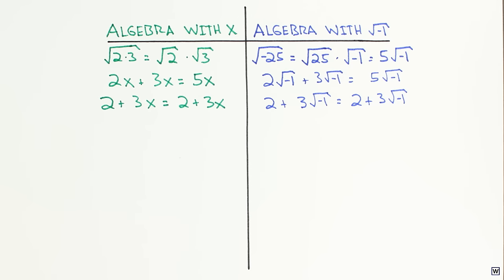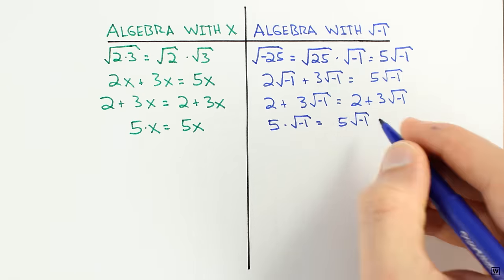Finally, unlike terms can be multiplied, just as in algebra with x. 5 times x is just 5x, and 5 times root of minus 1 is just 5 roots of minus 1.